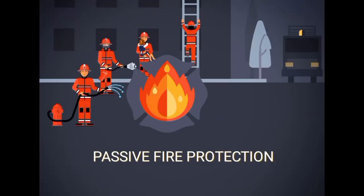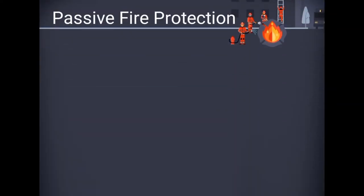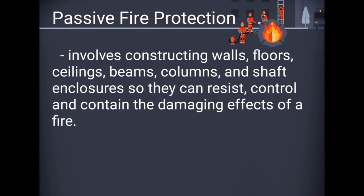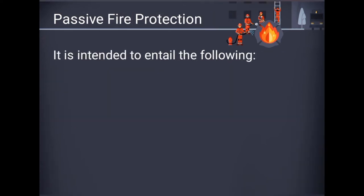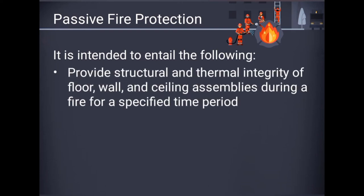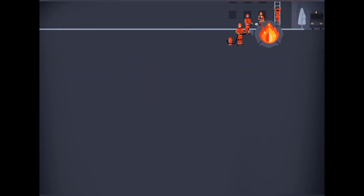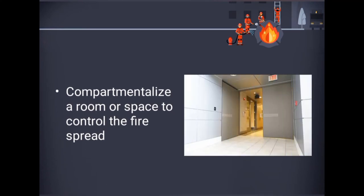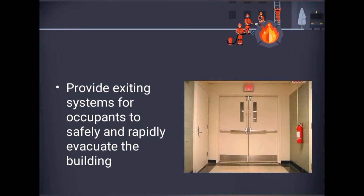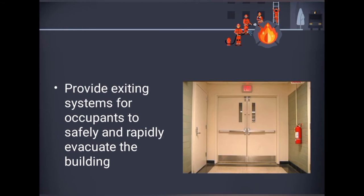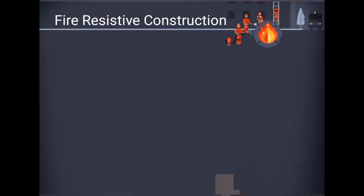Passive fire protection in buildings involves constructing walls, floors, ceilings, beams, columns, and shaft enclosures so they can resist, control, and contain the damaging effects of a fire. It is intended to: provide structural and thermal integrity of floor, wall, and ceiling assemblies during a fire for a specified time period; compartmentalize a room or space to control fire spread; and provide exiting systems for occupants to safely and rapidly evacuate the building. If well designed and maintained properly, passive fire protection systems are extremely effective in protecting building occupants and controlling the spread of fire.